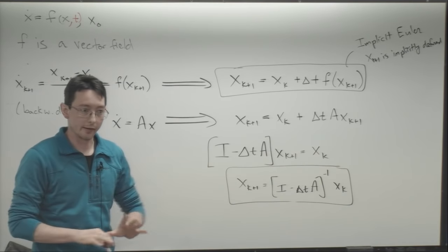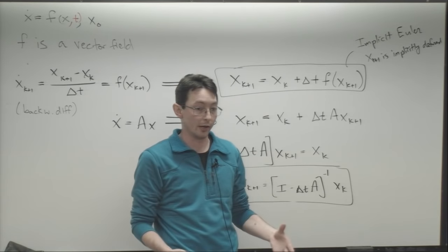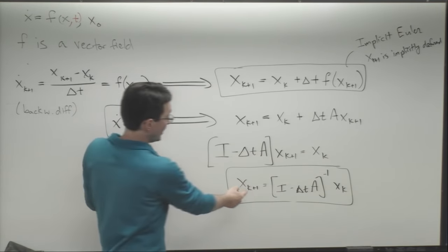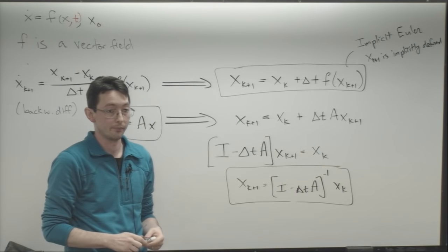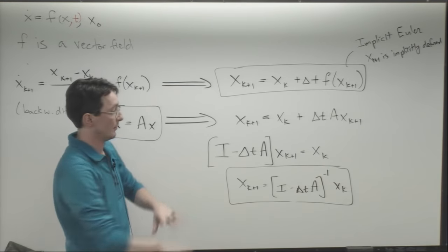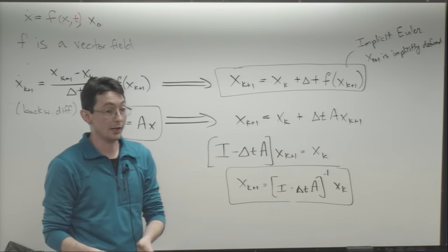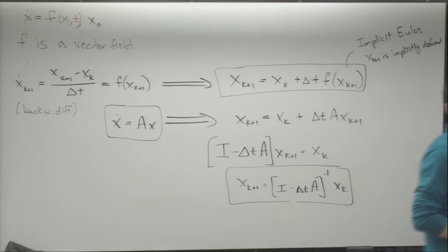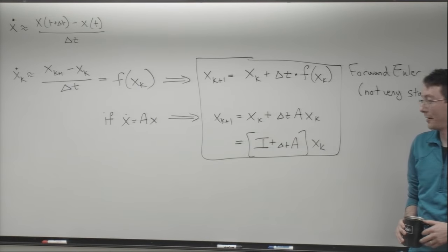I don't want to go any further today — this is a lot to take in. In the next lecture we're going to code these up and see what they do on a spring-mass-damper system where we know the answer. Then we'll take linear systems x dot equals Ax, compute when these schemes diverge from each other or agree, and how closely they agree for different delta t values. Any questions? Happy Halloween — I'll see you all on Monday.